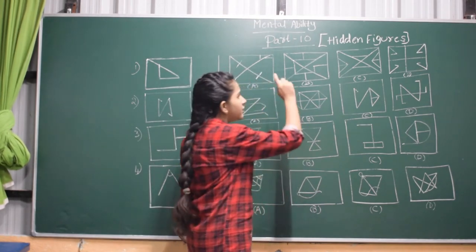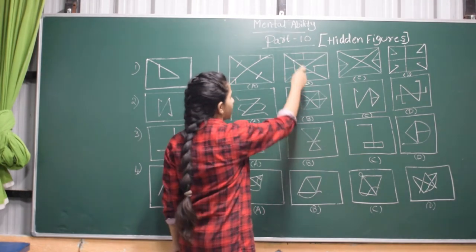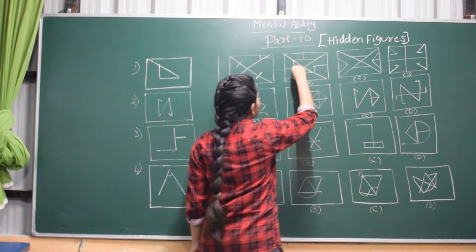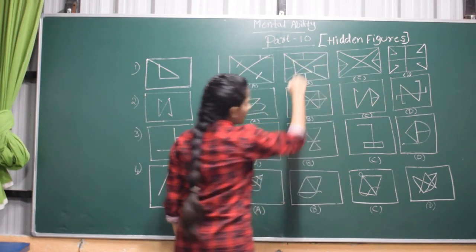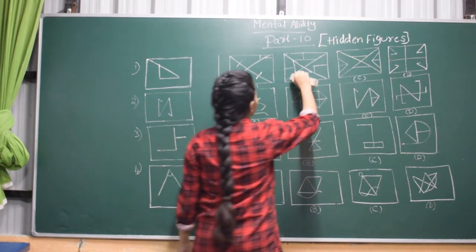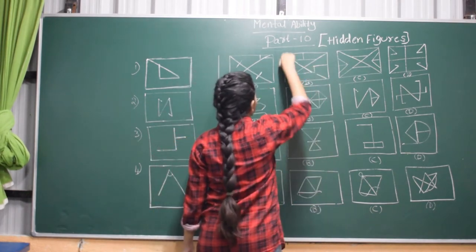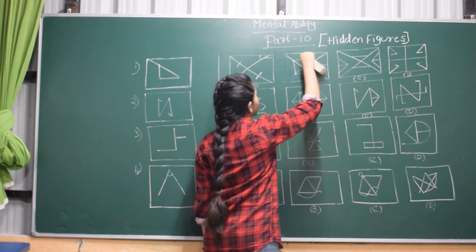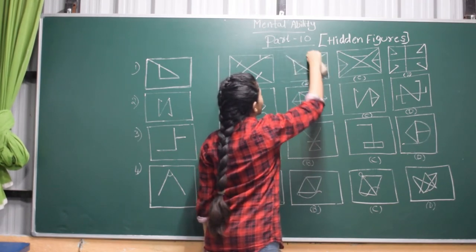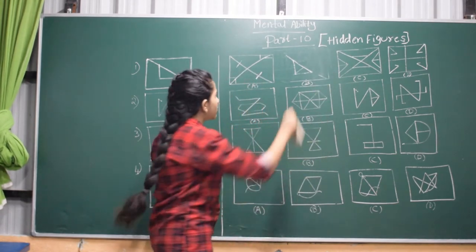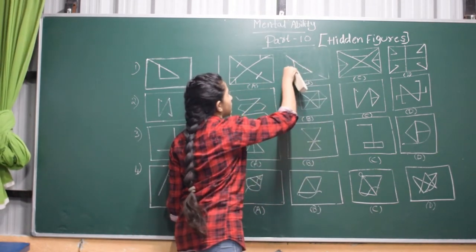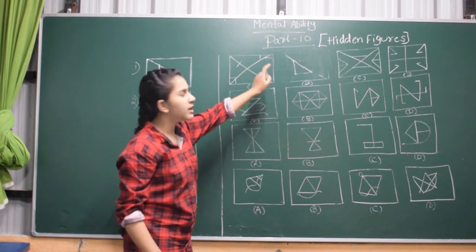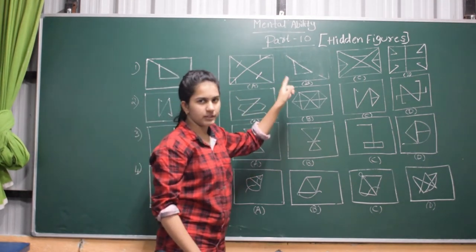If you go to the second figure, it looks a little bit complicated. But this is our answer because here our question figure is hidden. I'll erase and show that to you. So here our question figure is hidden — it is the same as our question figure. So in this figure, the question figure was hidden and this is the answer.